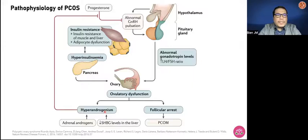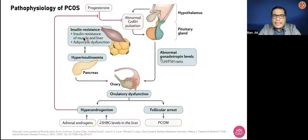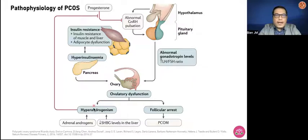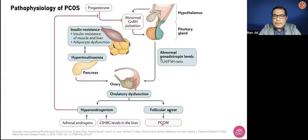Going back to insulin resistance and the pathophysiology of PCOS, insulin resistance is very important, particularly in the muscle and the liver. There may be some level of insulin abnormality in adipocyte dysfunction that will lead to hyperinsulinemia. This will cause ovulatory dysfunction, which will characterize hyperandrogenism and follicular arrest. This is due to adrenal androgen reduction in sex hormone binding globulin, giving you more free androgen in circulation. Follicular arrest causes polycystic ovarian morphology.